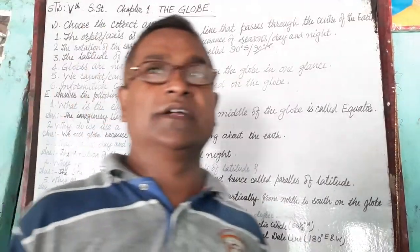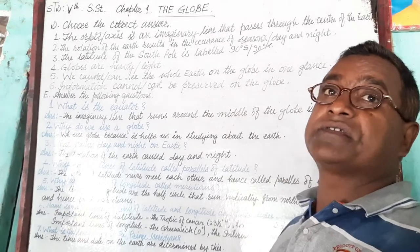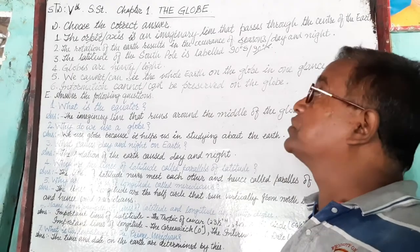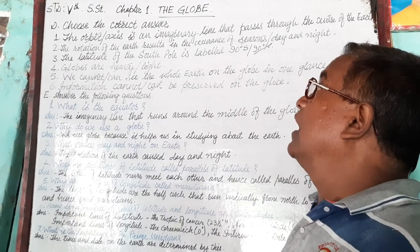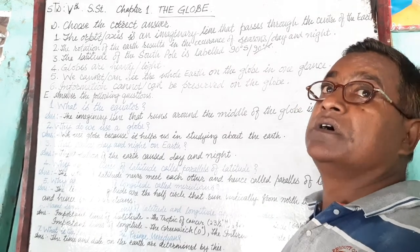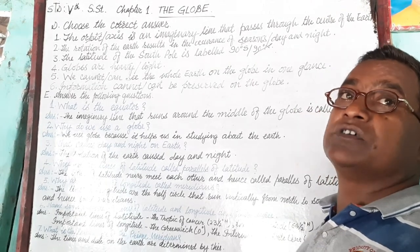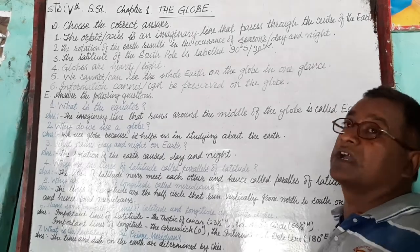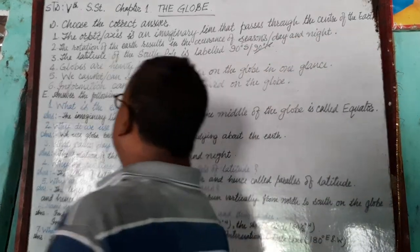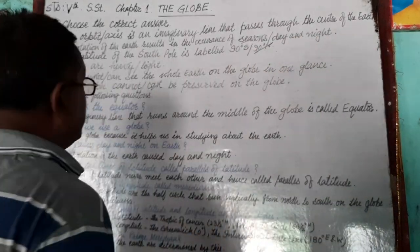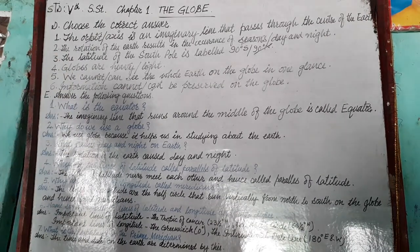Good morning viewers. This video is for standard fifth. In this video we will discuss the question answers of lesson one: The Globe. We have the A, B, or C question group. In the last video we solved other questions, and now we have to do group B.